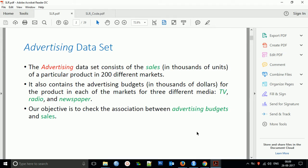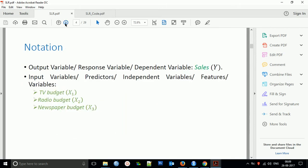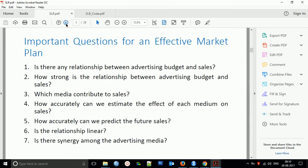Coming to the notations, we have output variable as sales and input variables are TV budget, radio budget, newspaper budget, or some other budget. Right now we're having three types of advertising budgets. These are called input variables and output variable is sales. We will find the relationship between all these three variables in terms of sales.